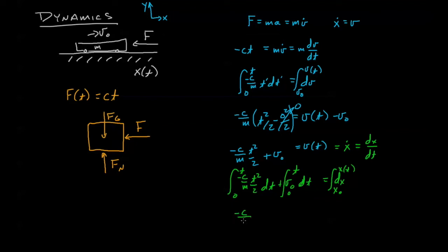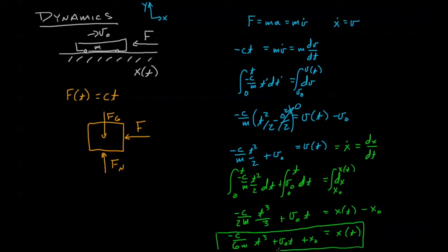This time I'll leave out the zero when I evaluate the integrals, and we get negative C over M, let's put that two over here, two M, T cubed over three plus V naught t equals X of T minus X naught. We'll get X of T by itself and simplify, and we find that the position as a function of time is negative C over six M, T cubed plus V naught t plus X naught. By using our differential equation, solving for it, and using the initial conditions we're able to come up with position as a function of time.